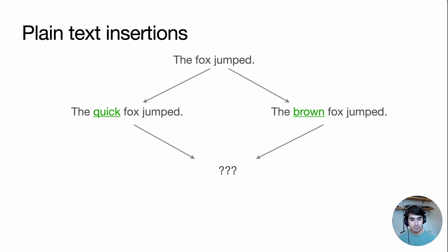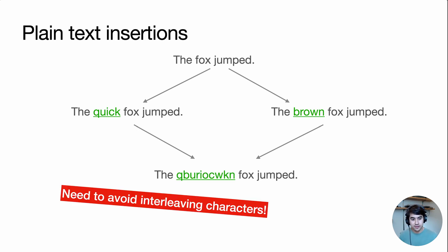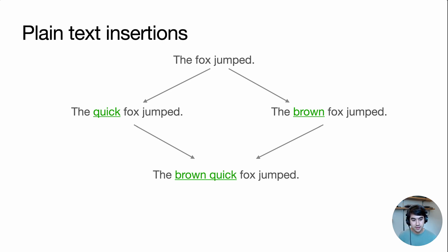Let's look at an example of intent preservation in the domain of plain text. Let's say we start with the sentence, the fox jumped, and two users concurrently insert different words in the sentence. One inserts quick, the other inserts brown. What should the final result be once we merge back together? One result we could imagine is something like this, where all the letters get combined in some order, but this is a difficult result to work with and edit later because the two words have become interleaved with each other. So we can say that this is a failure of intent preservation in some sense. A better merge result might be something like this, putting the individual words that were inserted separately so that we can edit from there.